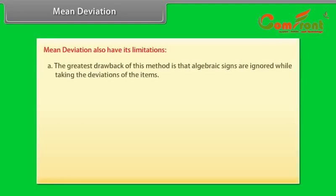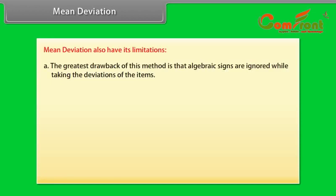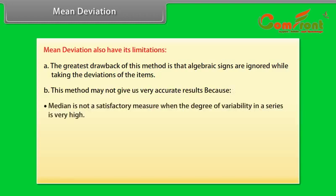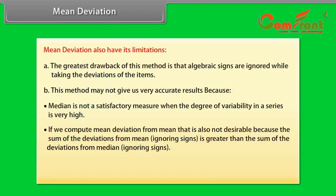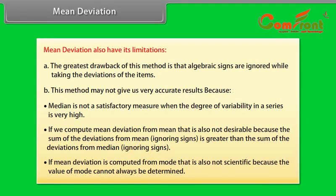Limitations of mean deviation: the greatest drawback is that algebraic signs are ignored while taking deviations. This method may not give accurate results because the median is not satisfactory when variability is very high. Computing mean deviation from the mean is also not ideal because the sum of deviations from the mean ignoring signs is greater than from the median. If computed from the mode, it is not scientific because the mode cannot always be determined.